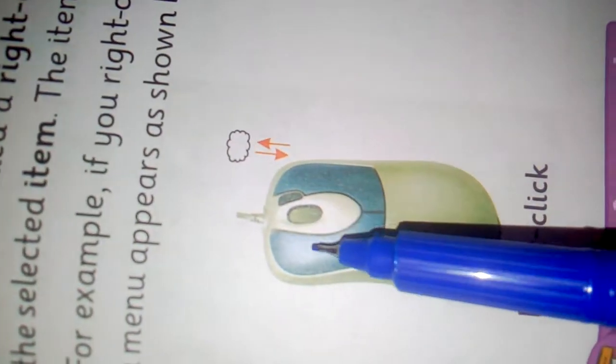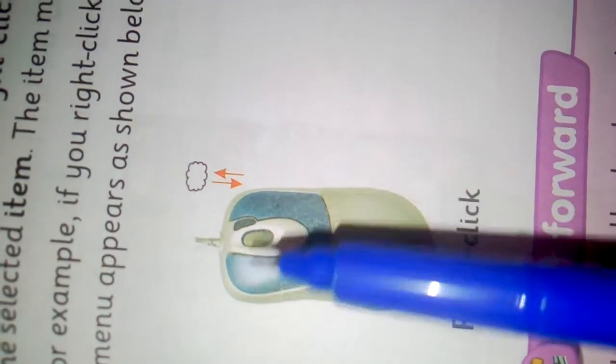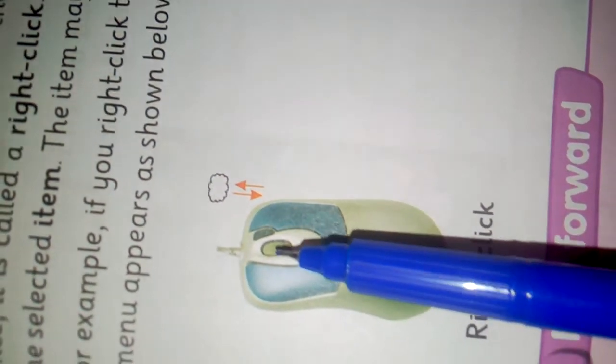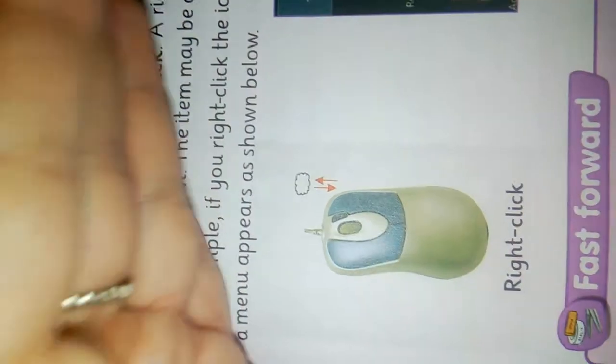As you can see in the picture, there are two buttons on the mouse: left button and right button. And there is a scroll wheel in the center which is used for scrolling the document up and down.